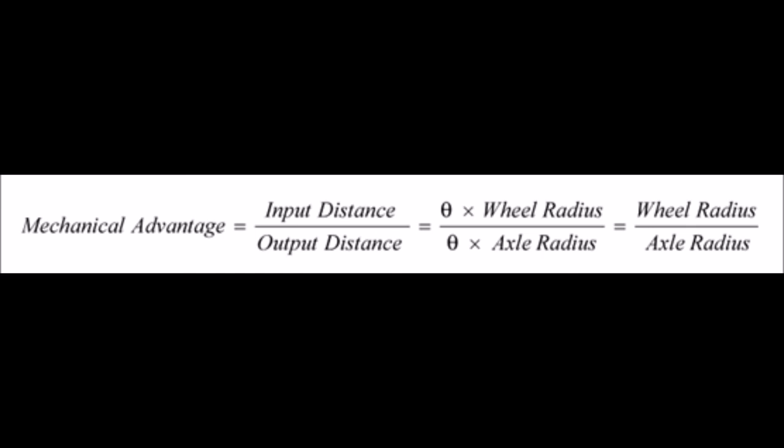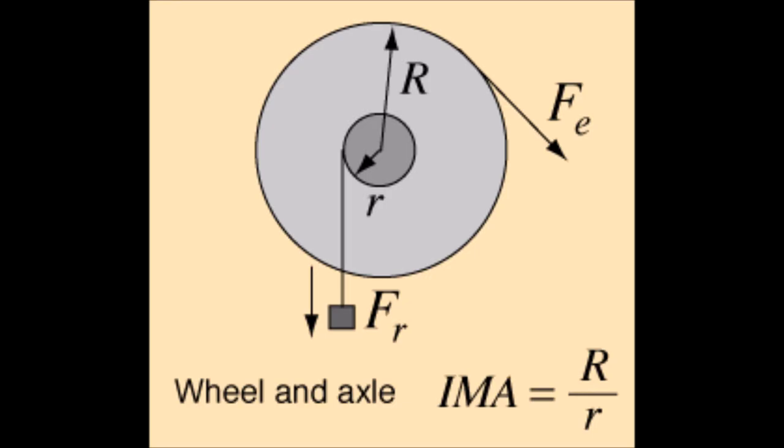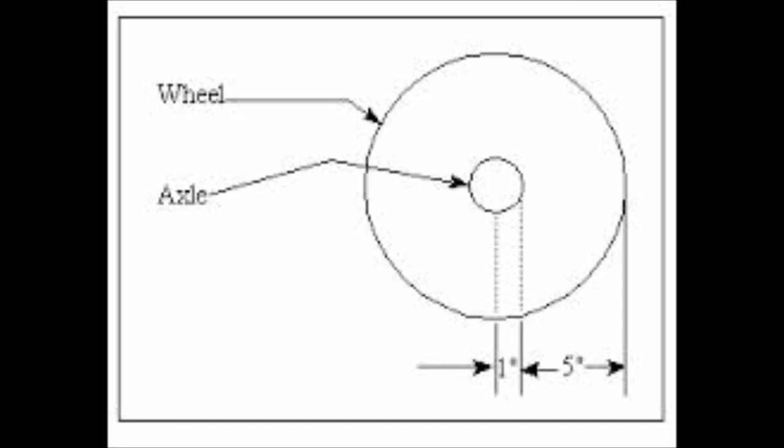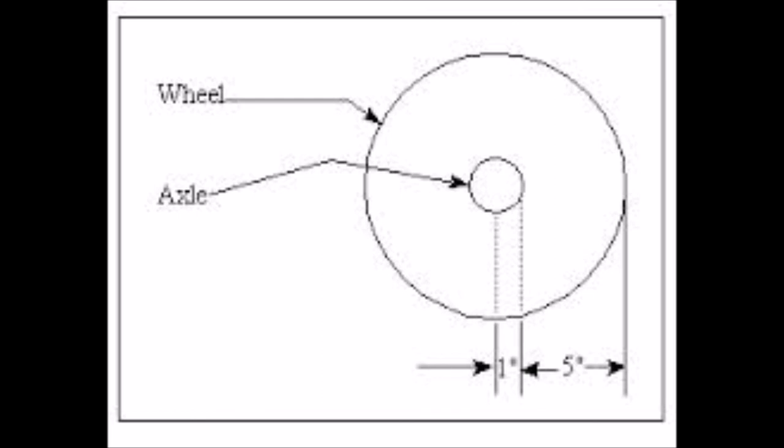Mechanical advantage of wheels and axles equals input radius divided by the output radius. If mechanical advantage for wheels and axles are less than one, the output wheel has less torque and will spin fast. If mechanical advantage of the wheels and axles are more than one, the output wheel has more torque but will spin slower. Therefore, since we are building the mousetrap car for distance, we want the mechanical advantage to equal higher than one.